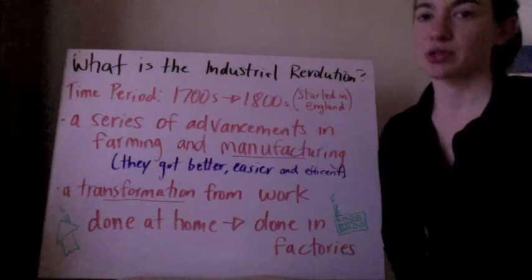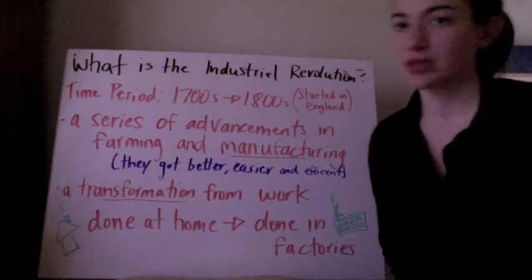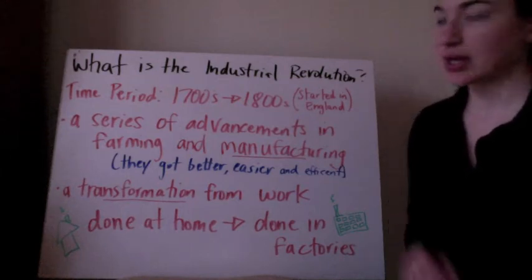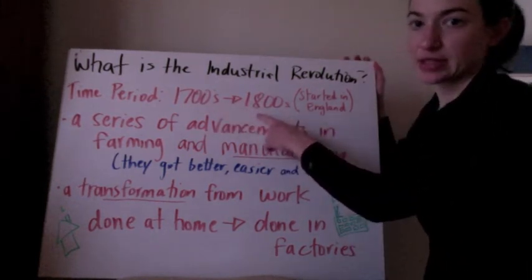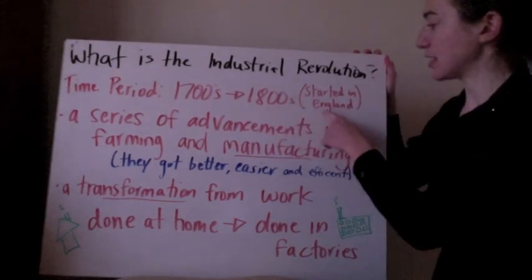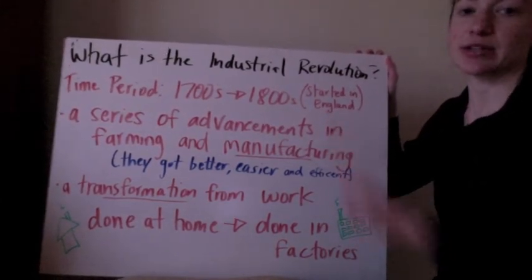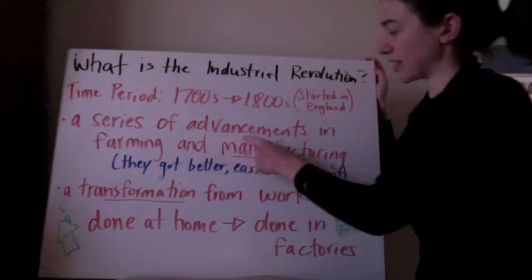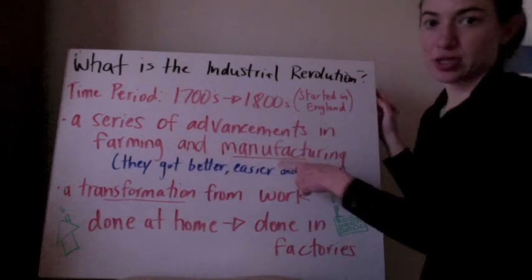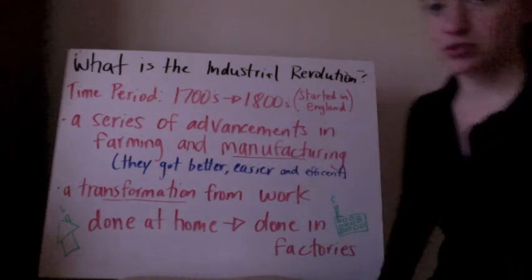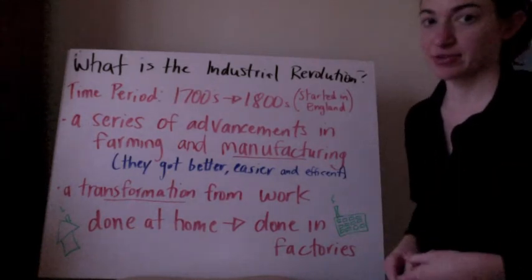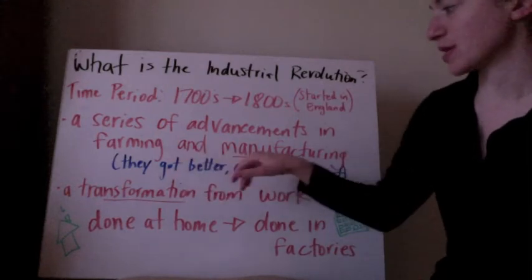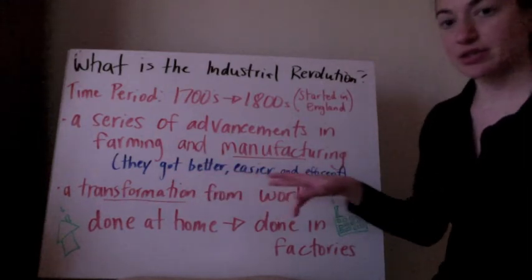This topic is the Industrial Revolution. The first question we're going to answer is: what is or what was the Industrial Revolution? It took place between the 1700s and the 1800s, and it started in England, then spread to the rest of the world. The definition is a series of advancements in farming and manufacturing — manufacturing simply means making things, like in factories. Basically, farming and manufacturing got better, easier, and more efficient.